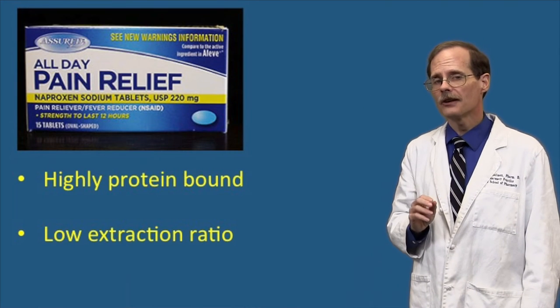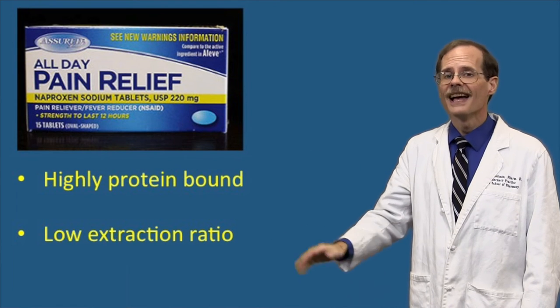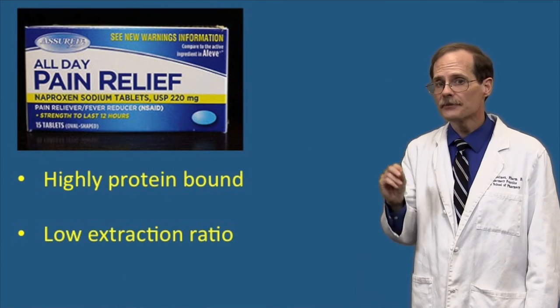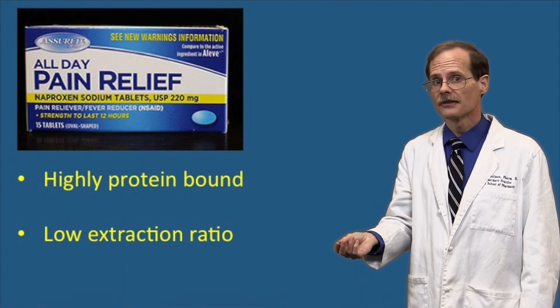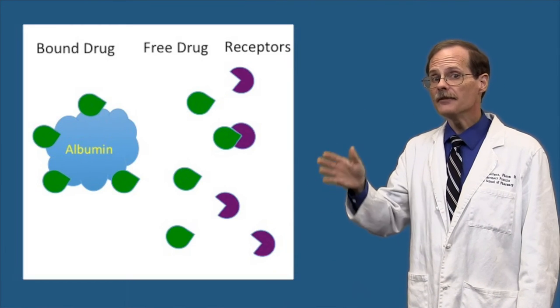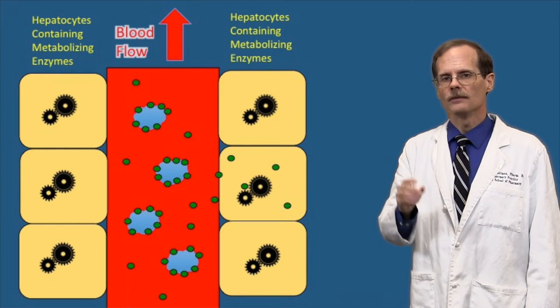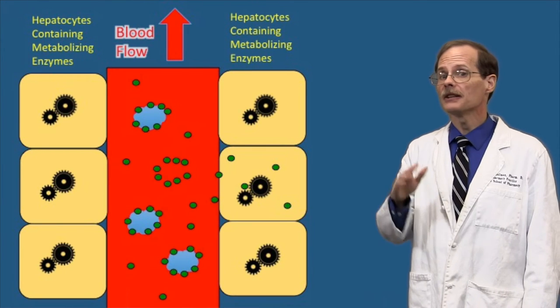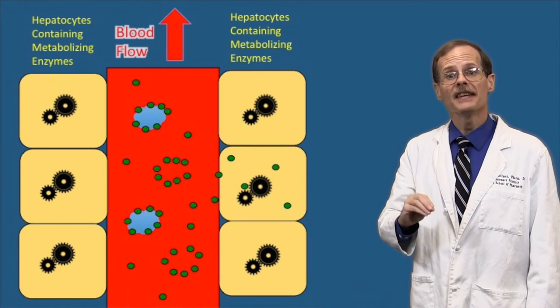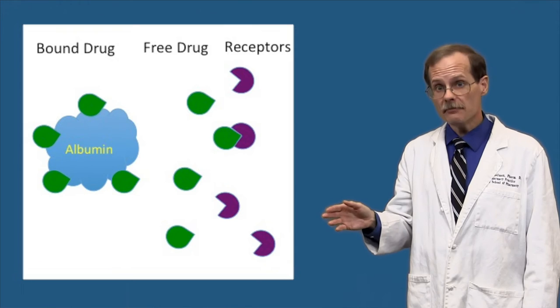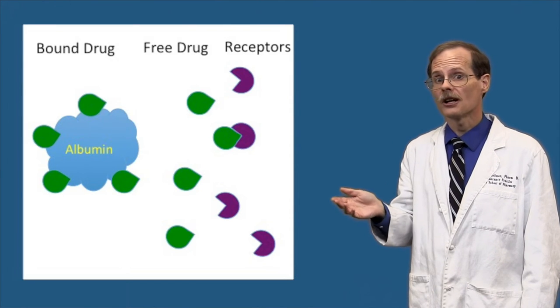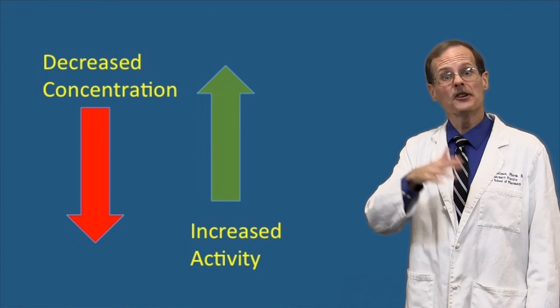Sometimes pharmacodynamic factors offset the changes in hepatic clearance. Naproxen is a highly protein bound drug with a low extraction ratio — exactly the kind of drug we'd expect the rate of hepatic clearance to increase as a result of low albumin concentrations. However, only the unbound naproxen is pharmacologically active. So while the patient with low albumin might be clearing the drug faster, which would make the total drug concentrations in the blood go down, more of the drug that's left is unbound and thus pharmacologically active. The two effects largely cancel each other out.